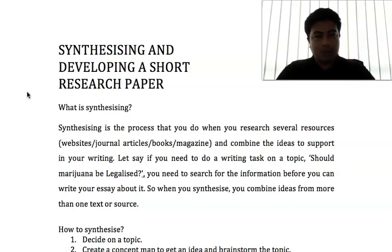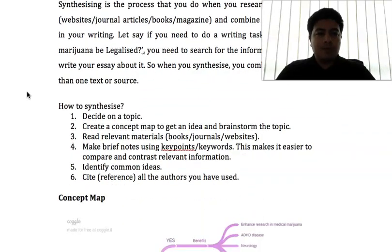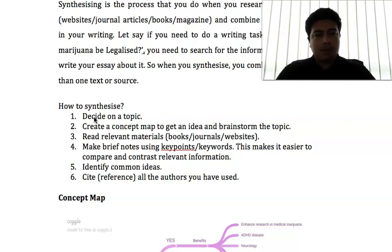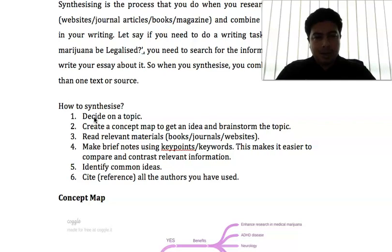This video is a continuation on how to develop a short research paper or write an academic essay. The first step, as mentioned in the previous video, is to decide on a topic. Once you have decided on a topic — it could be scientific, social, economic, or political — you create a concept map or mind map to brainstorm that topic.